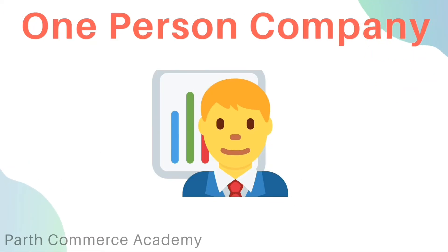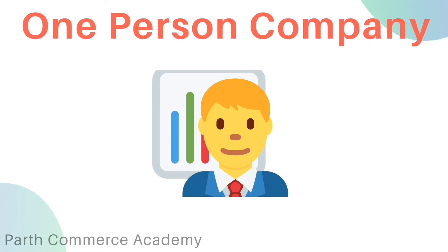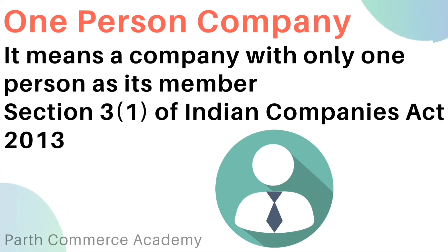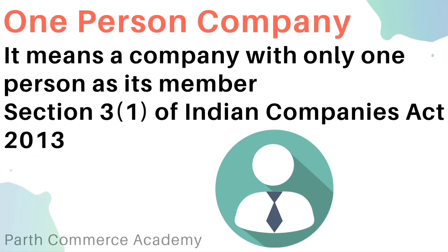The last type of company is One Person Company. This type of company is also seen in the UK, USA, and Australia. In India, it was introduced in 2013 where many changes took place. It means a company with only one person as its member, so it has only one shareholder as well.